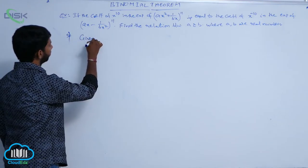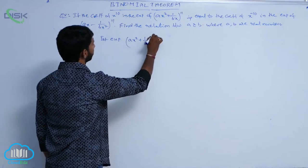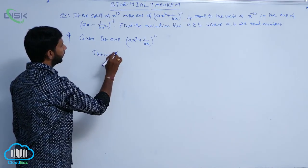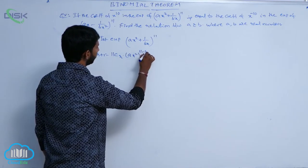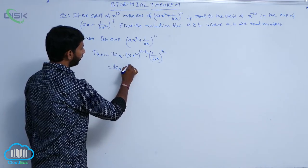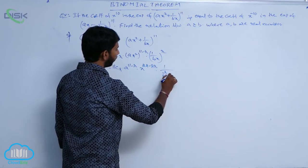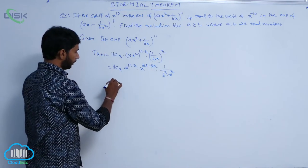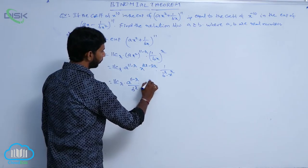The first expansion is (ax² + 1/bx)^11. Write T(r+1) = 11Cr · (ax²)^(11-r) · (1/bx)^r = 11Cr · a^(11-r) · x^(22-2r) · (1/b^r) · x^(-r), which simplifies to 11Cr · (a^(11-r) / b^r) · x^(22-3r).